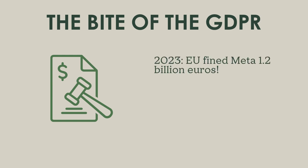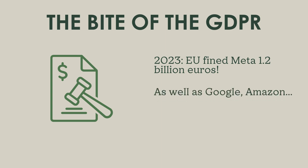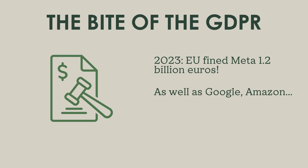Part of the reason for this is specifically the bite of the GDPR — and make no mistake, it bites hard. In 2023, the EU fined Meta 1.2 billion euros for the way it transferred EU residents' data to servers in the US, making it susceptible to spying by the NSA. Over the years since its implementation in 2018, the GDPR has resulted in numerous fines of hundreds of millions of euros for big tech companies like Google, Amazon, and Meta. The GDPR stipulates fines of either up to 10 million euros or 2% of total worldwide annual turnover of the preceding financial year, whichever is higher — and it can even double this in particularly egregious cases.